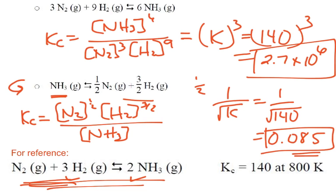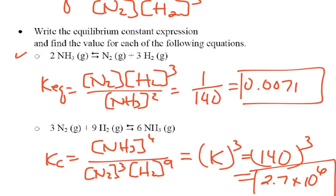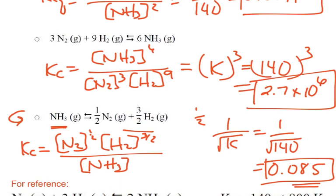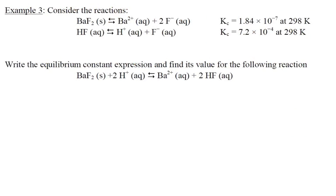So I have those manipulations. So again, if I were to flip my equation around, I have to take the inverse. If I multiply it by 2, then I'm going to square something. If I multiply it by 3, I cube my value. If I divide by 2, then I take the square root of my value. Those are the manipulations I can do. Now let's put them together.